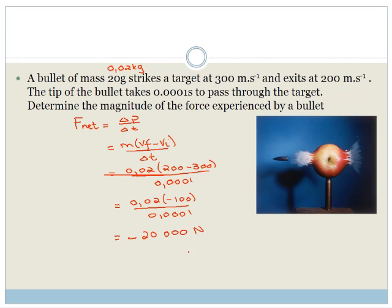But have we finished the sum? No we haven't. Because it says determine the magnitude of the force. The magnitude means that you don't have to put direction in. You just want the size of the force. So the magnitude of the force, F net, the magnitude of F net equals 20,000 newtons, which is pretty huge.